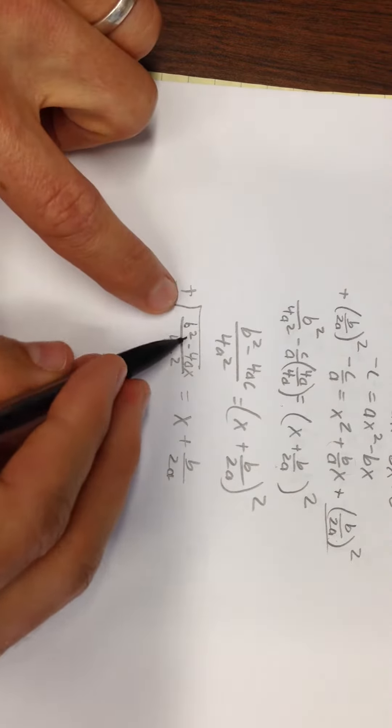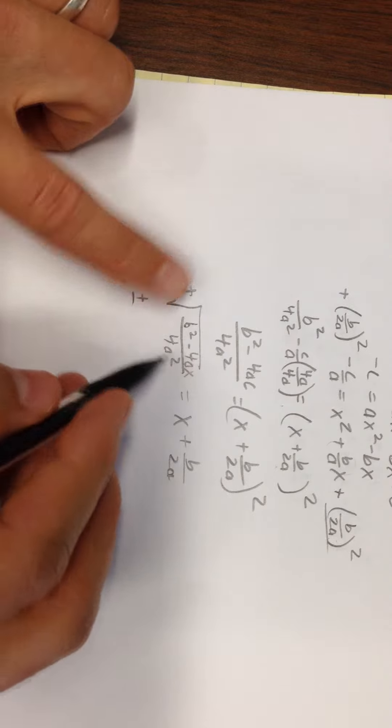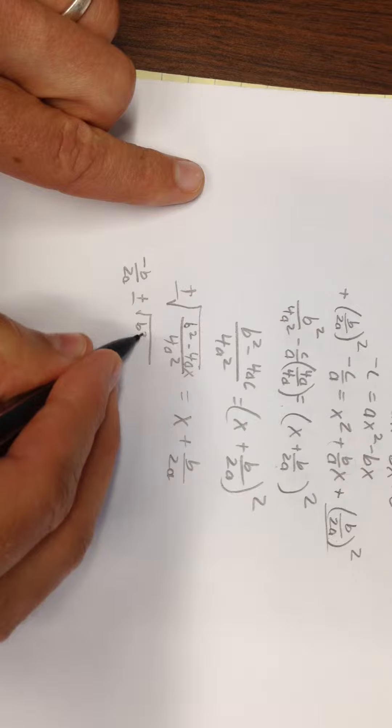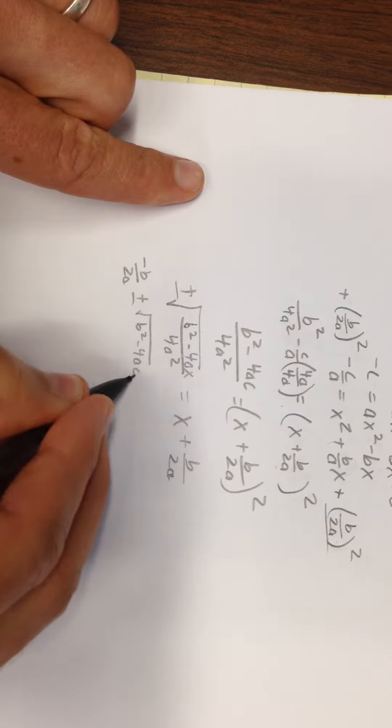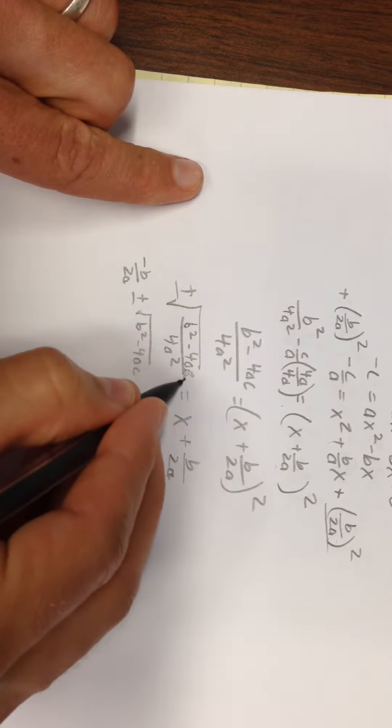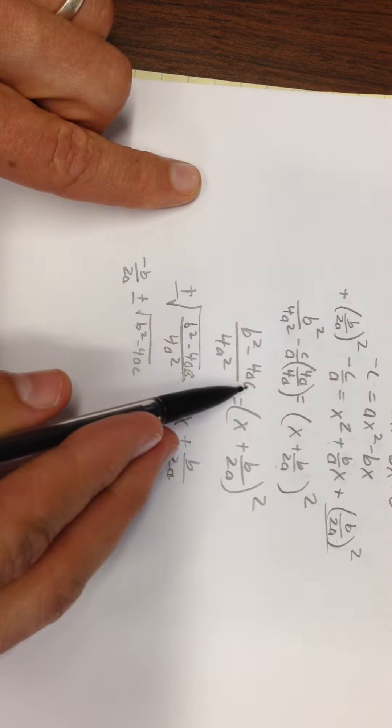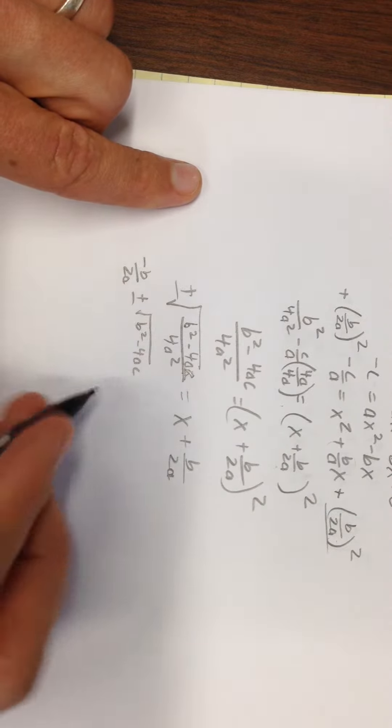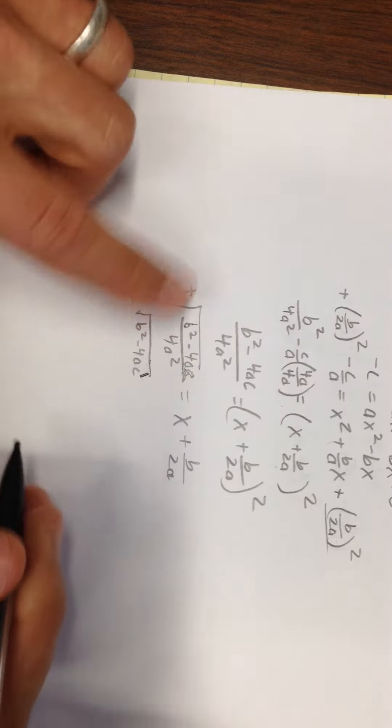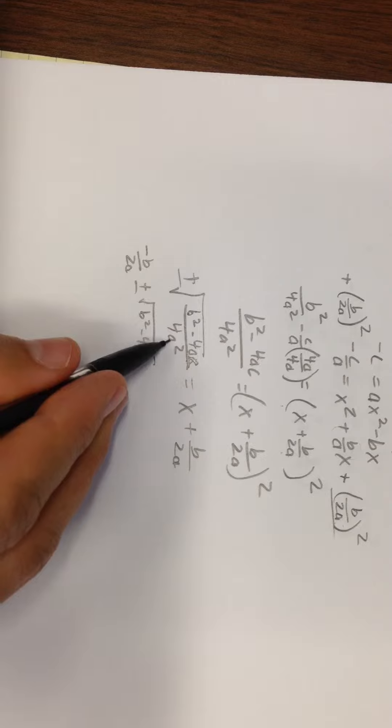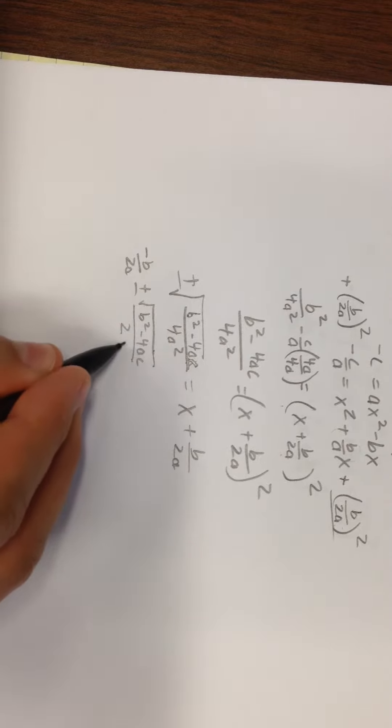Well you can separate a square root of a fraction to the square root of the numerator, b² - 4ac. I don't know how that got sloppily written as an x. So we have 4ac, divided by the square root of 4a², which is 2a.